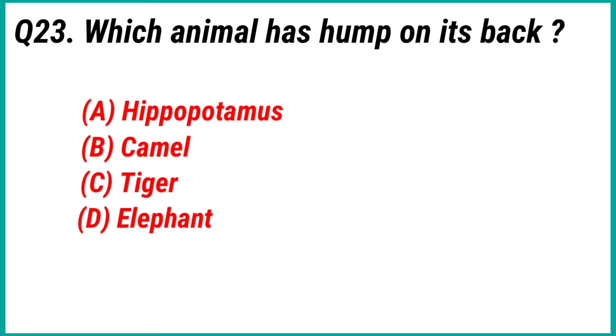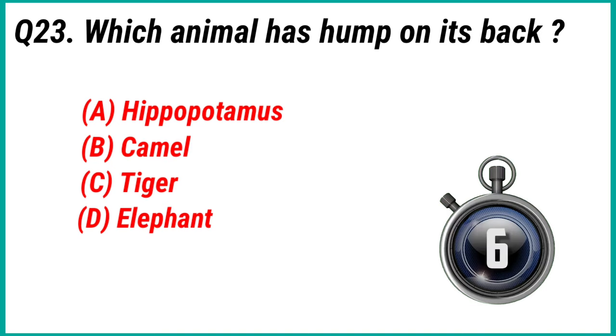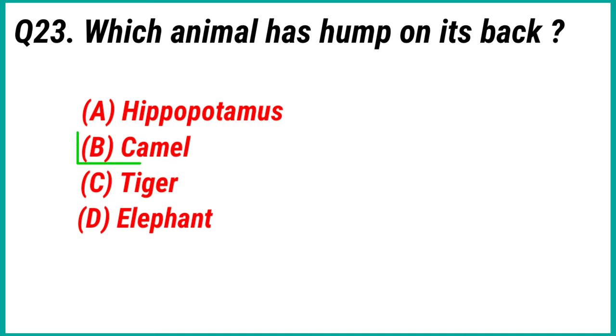Question 23: Which animal has a hump on its back? Answer option B: Camel.